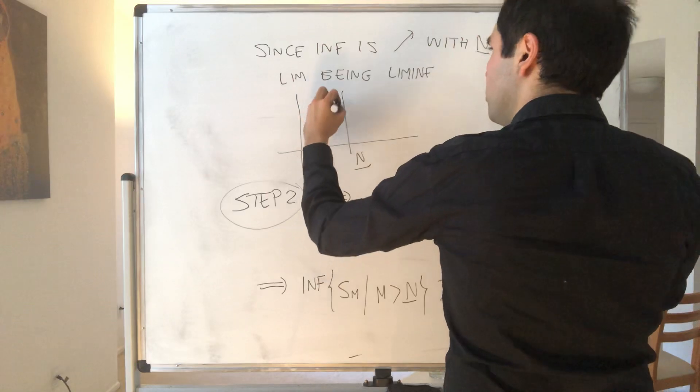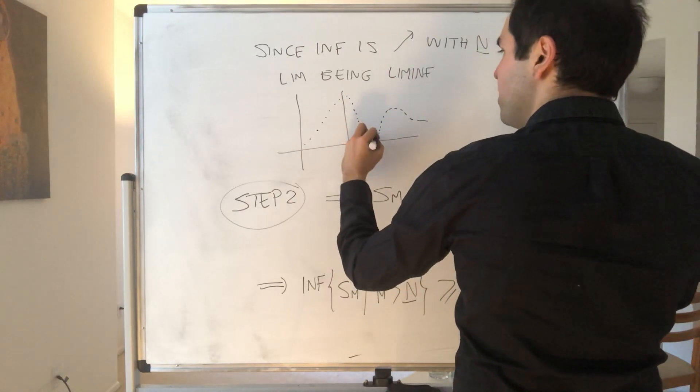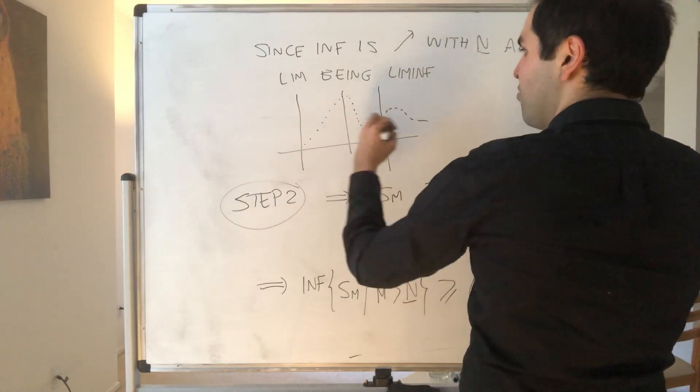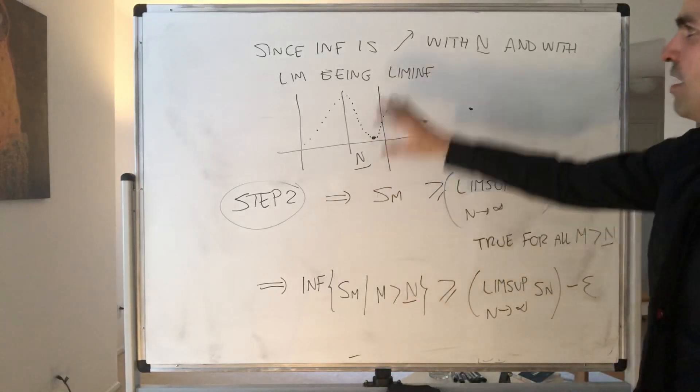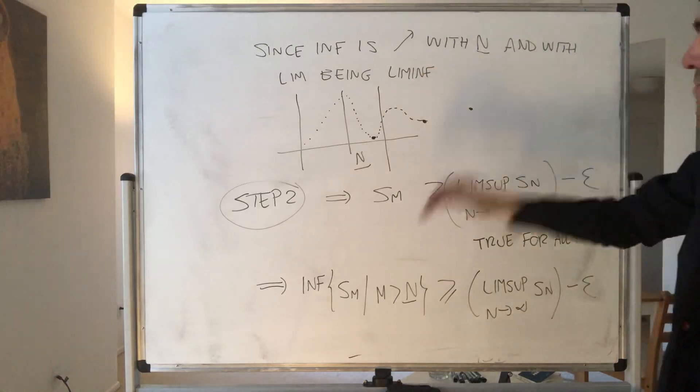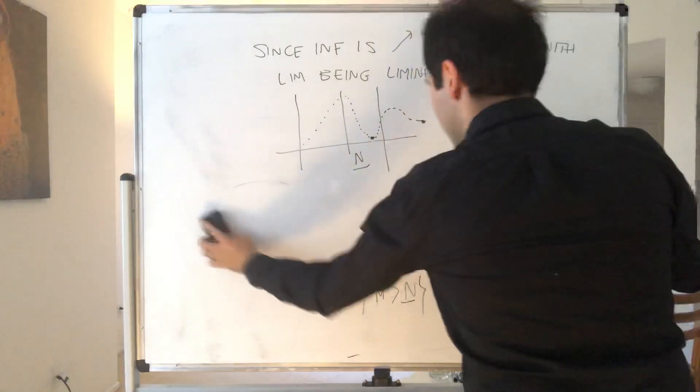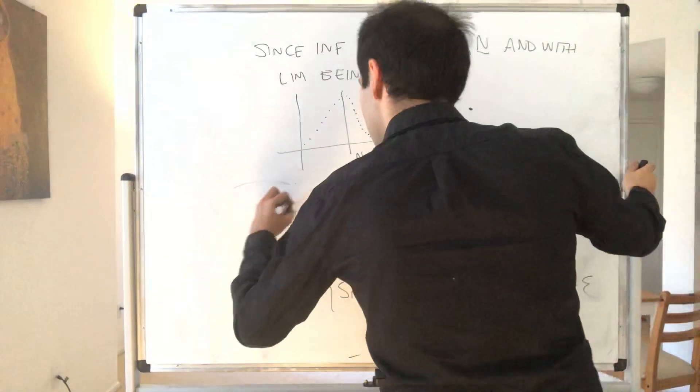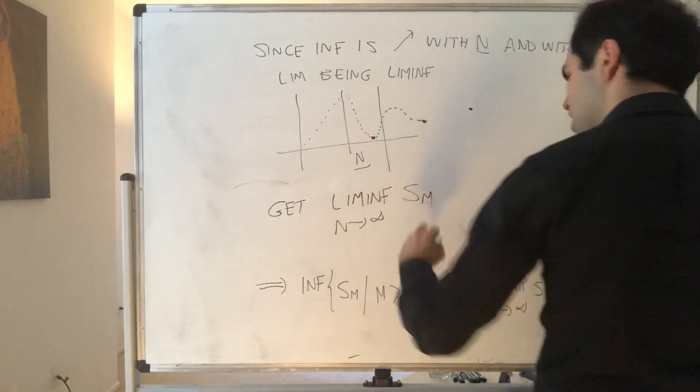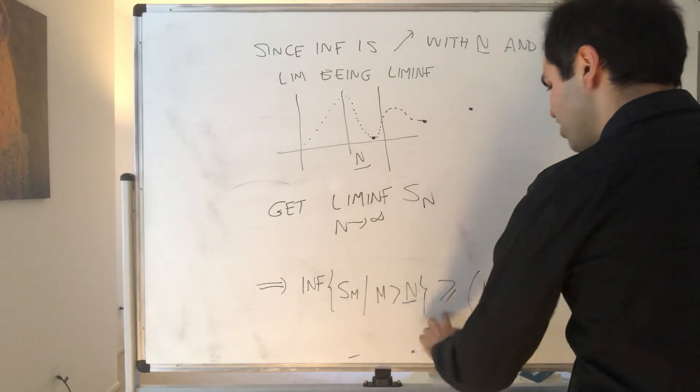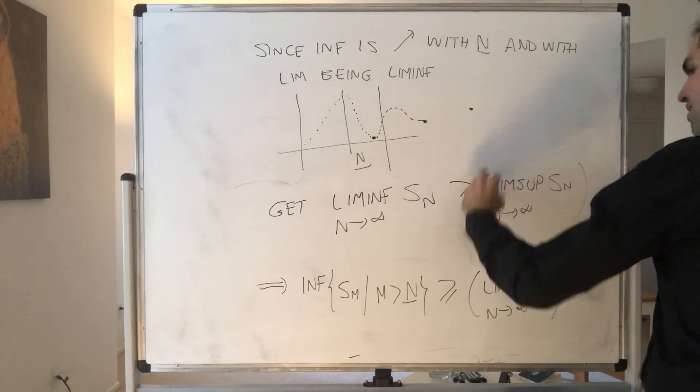Here, maybe the smallest value is here, but then after a threshold, the smallest value becomes bigger, and then the lim inf might be somewhere bigger here. So in particular, because the infimum is increasing and the limit is lim inf, you actually get that lim inf is bigger than that. So you get that lim inf as N goes to infinity of Sn is actually bigger than this fixed constant, which is the lim sup as N goes to infinity of Sn, minus ε.